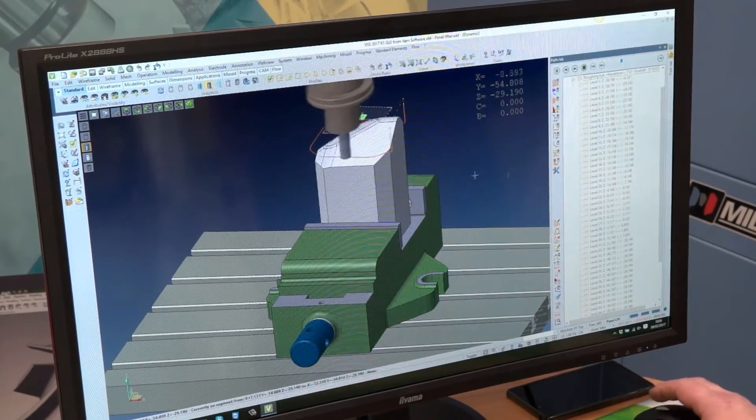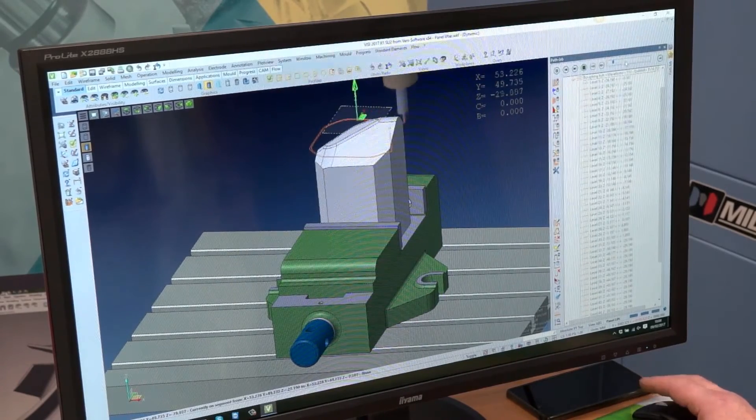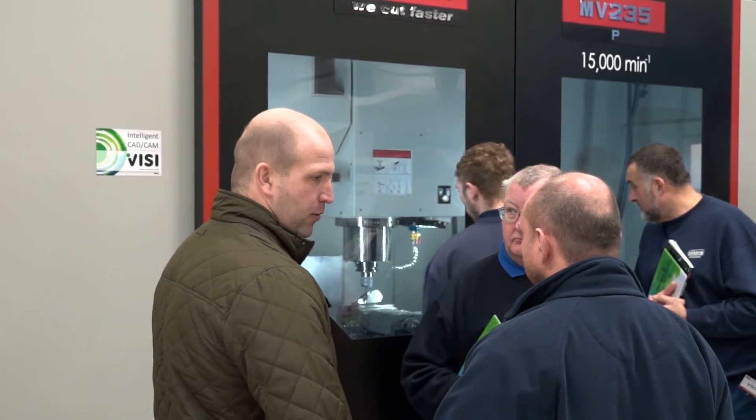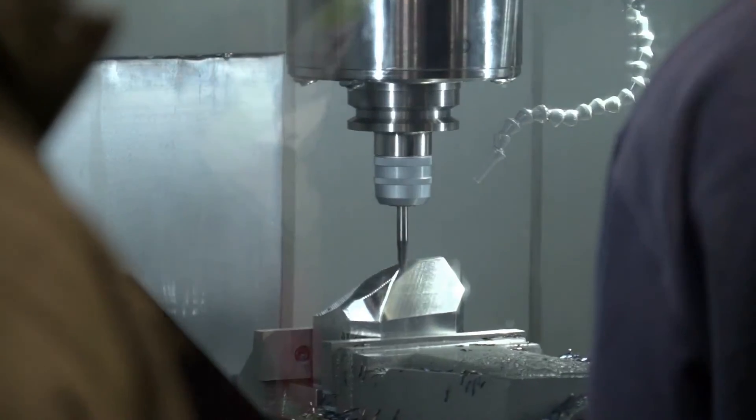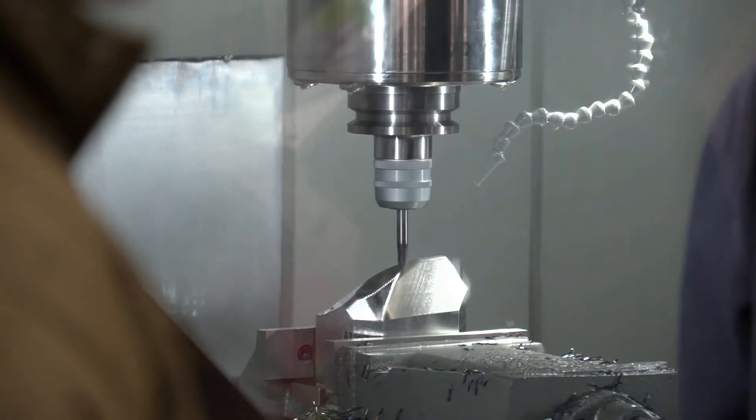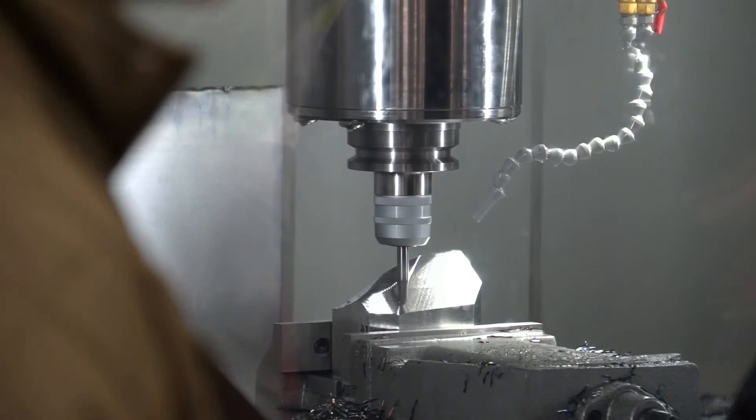Compare that to the standard roughing: it's a 1mm step down with a 75% step over. The times we've shown, and people have been impressed by - basically, the part we're machining takes 25 minutes with standard roughing. With the new waveform and the way it works, it's more like 12 minutes.